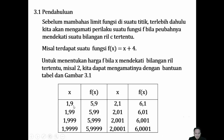Jadi x-nya dari 1,9 maka nilai fungsinya adalah 5,9. Dari 1,99 semakin mendekat ke nilai 2 — ini dari sebelah kirinya — maka nilai fungsinya dari 5,9 semakin mendekati 5,999... Kemudian dari sebelah kanannya, dari 2,1 kemudian sampai mendekat ke 2,001, maka nilai fungsinya: jika 2,1 dia 6,1, dari 2,01 semakin dekat ke 2 nilai fungsinya akan semakin mendekati 6. Di sini juga semakin mendekati 6.